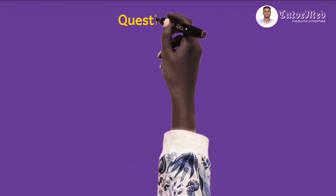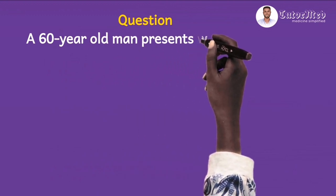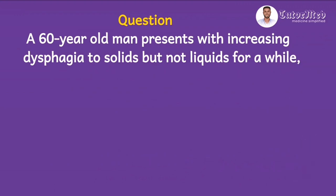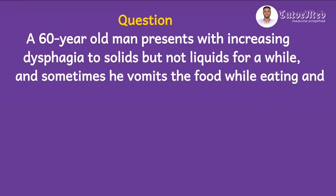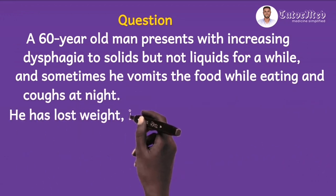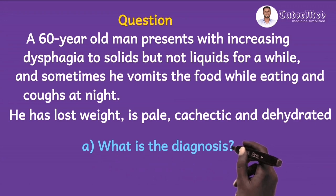Let's take a look at the question. The question reads: A 60-year-old man presents with increasing dysphagia to solids, but not liquids for a while. And sometimes he vomits the food while eating, and then he coughs at night. He has lost weight, is pale, cachectic, and dehydrated. The first question reads: What is your diagnosis?